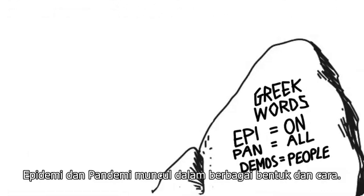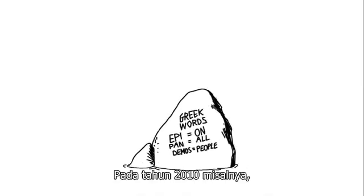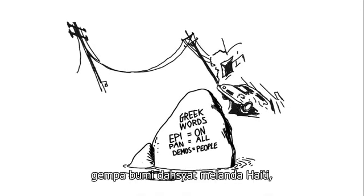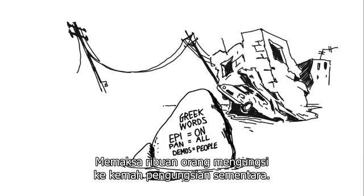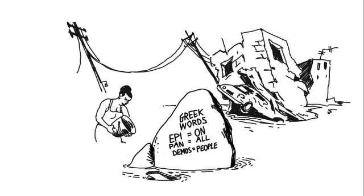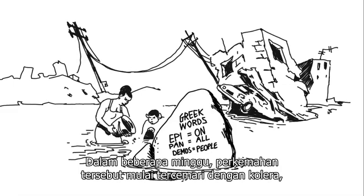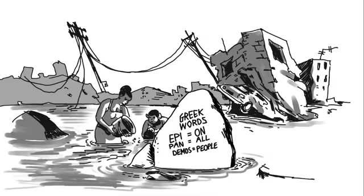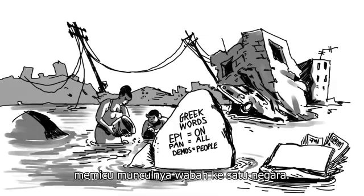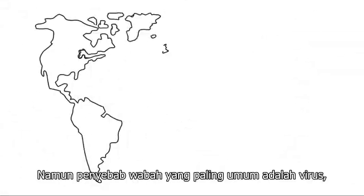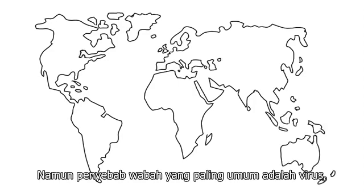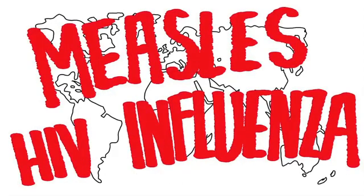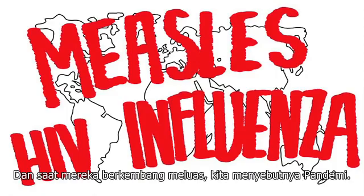Epidemics and pandemics come in many shapes and forms. In 2010, for instance, a devastating earthquake struck Haiti, forcing thousands of people into temporary refugee camps. Within weeks, the camps had become breeding grounds for cholera, a bacteria spread by contaminated water, triggering a country-wide epidemic. But the most common cause of epidemics are viruses such as measles, influenza and HIV. And when they go global, we call them pandemics.